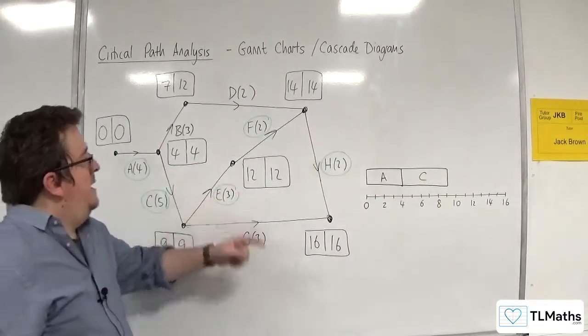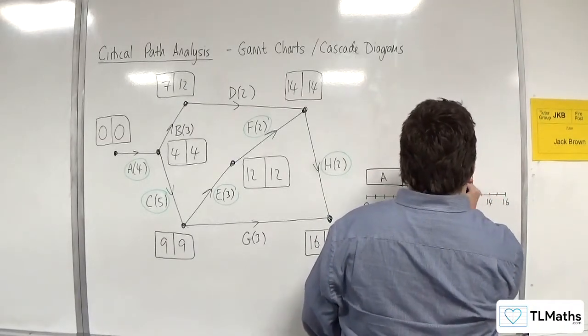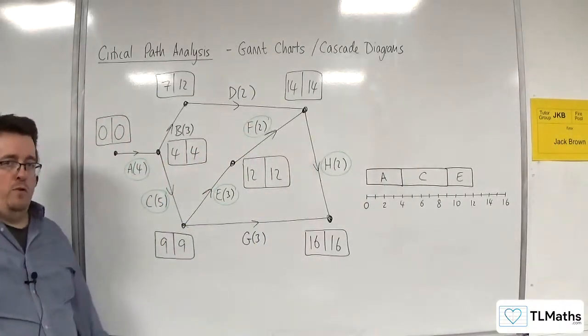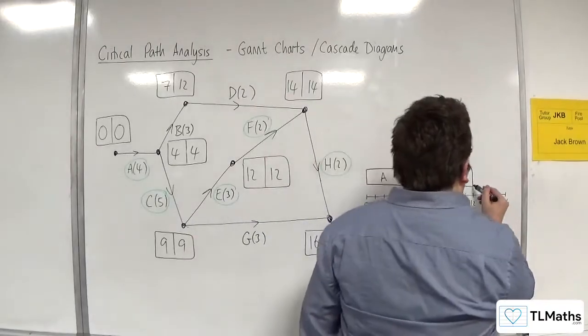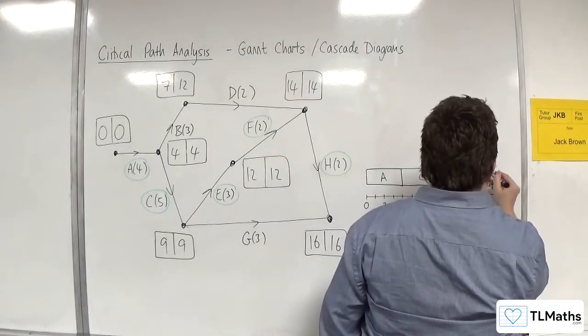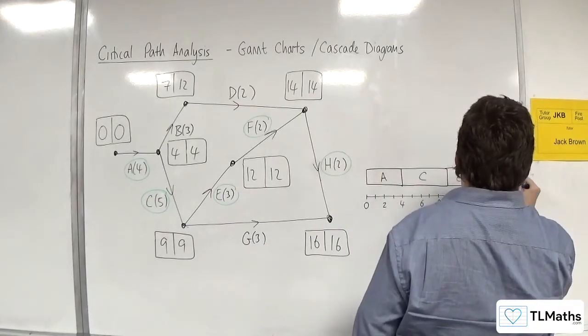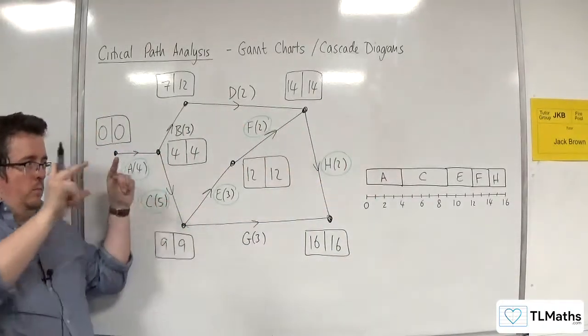Then I've got E for another 3 hours. Obviously you'll be able to draw this with a ruler. And then F for another 2 hours, and then H for another 2 hours. So you want them all the same width.